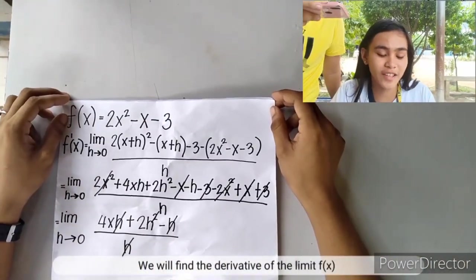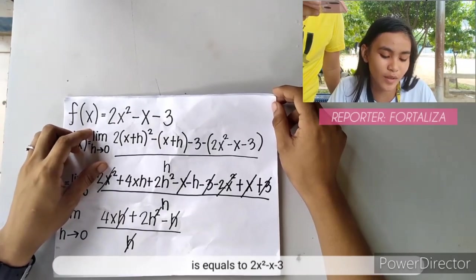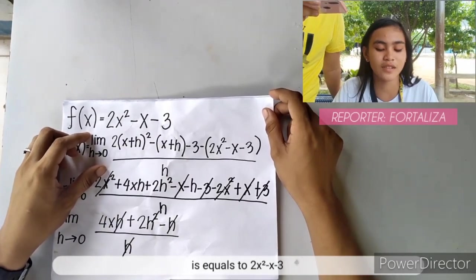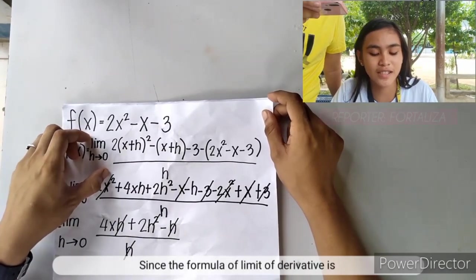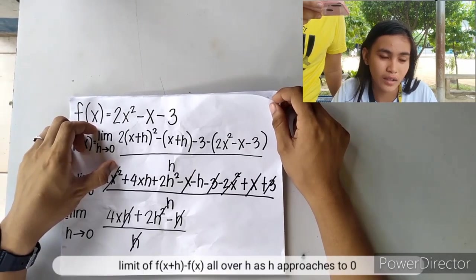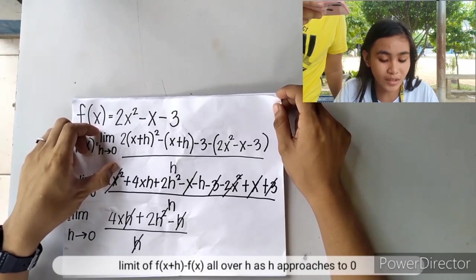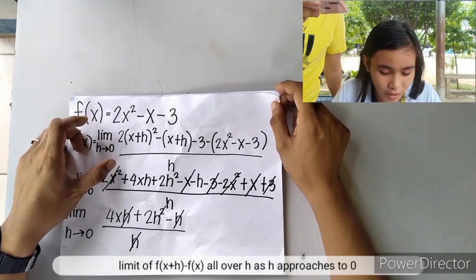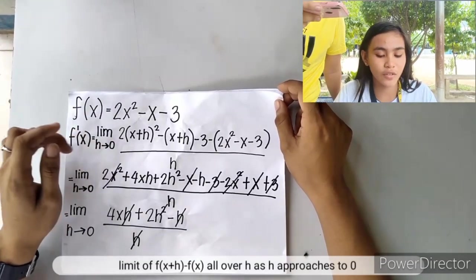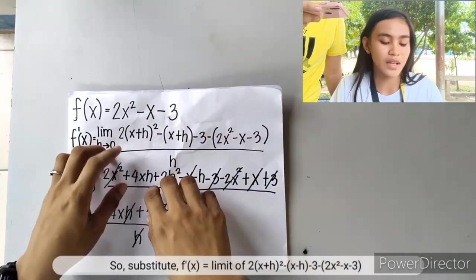We will find the derivative using the limit process where f(x) equals 2x squared minus x minus 3. The formula is the limit of f(x+h) minus f(x) all over h as h approaches 0.